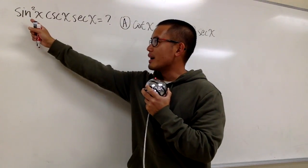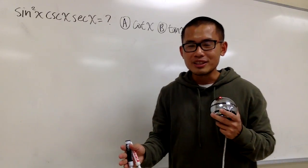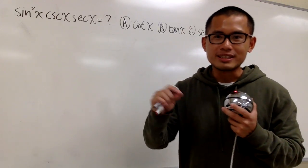Okay, here we have sine squared x times cosecant x times secant x. And the good old strategy is let's work with sine and cosines only, right?